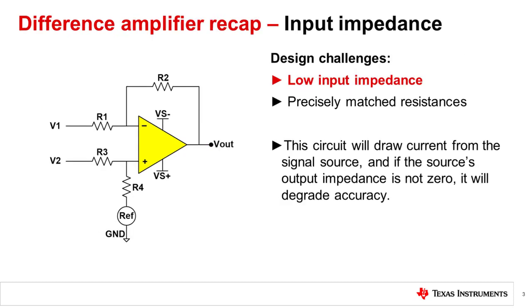To recap, the difference amplifier's input impedance is limited by the surrounding resistors, R1 through R4. This circuit will draw current from the signal source, and if the source's output impedance is not zero, it will degrade accuracy.